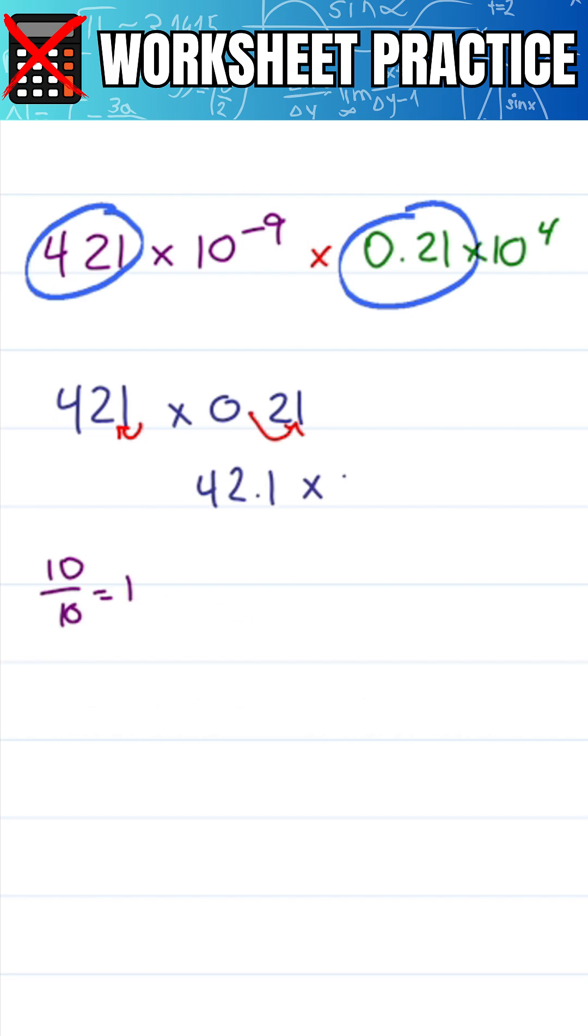That gives me 42.1 times 2.1 which I'm going to simplify as 42 times 2 for 84. That's 4 times 2 is 8 and 2 times 2 is 4.